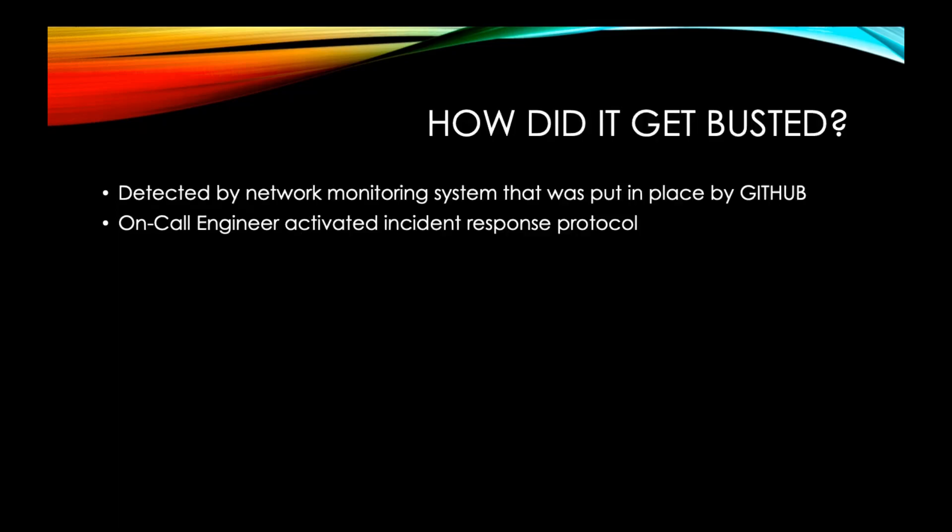So how did it get found out? GitHub had a network monitoring system in place that keeps track of both outbound and inbound traffic loads throughout the day. It was detected by this monitoring system and the engineer on call was notified of the anomaly.